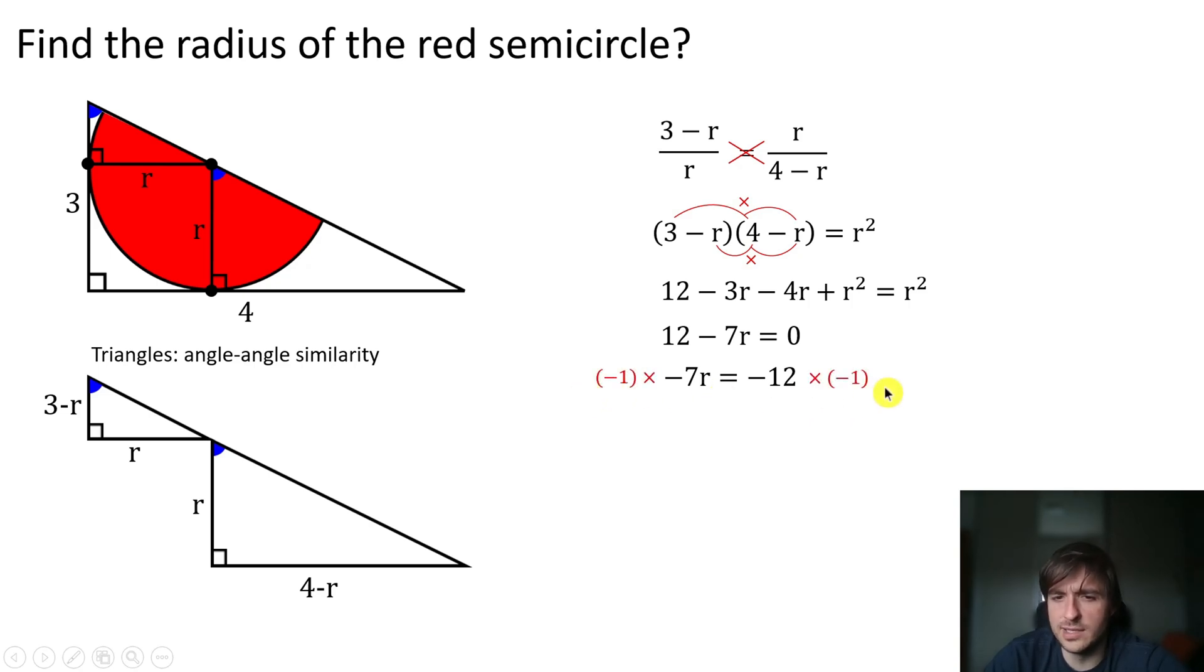Multiplying both sides by -1 to get rid of the negative sign, we obtain that 7 times the radius equals 12. We're going to pass the 7 divided to the other side to obtain the answer: r = 12/7.